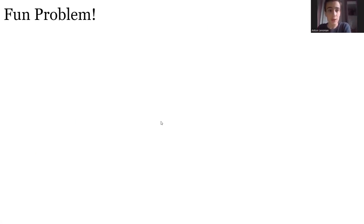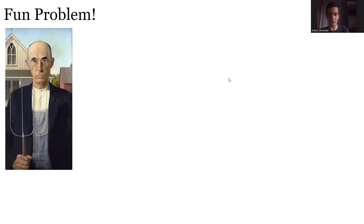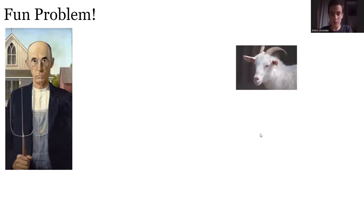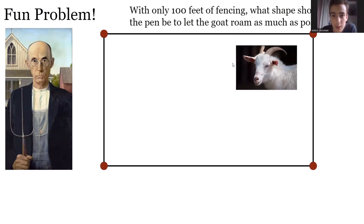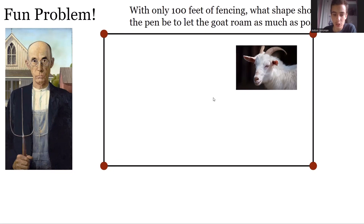Now we'll move to a fun problem. We have Farmer Grant, who has a goat and a rectangular pen for the goat to graze in. The central question Grant wants to answer is: with only 100 feet of fencing, what shape should the rectangular pen be to let the goat roam as much as possible — meaning maximize area? It has to be a rectangle.